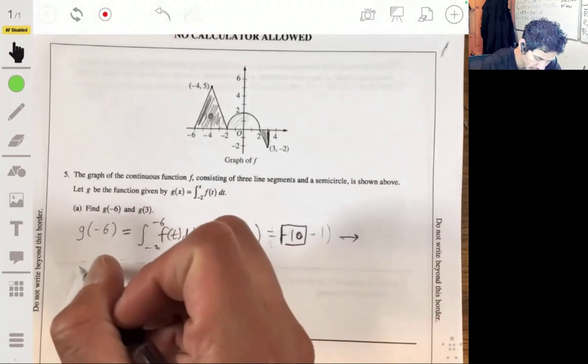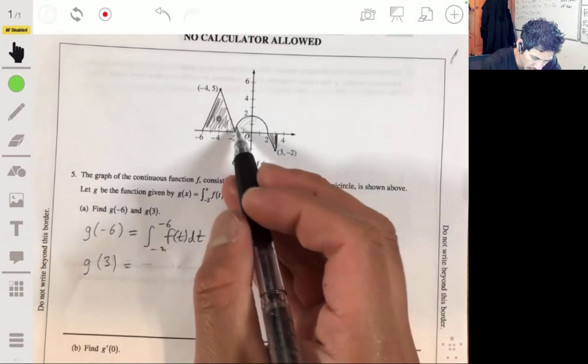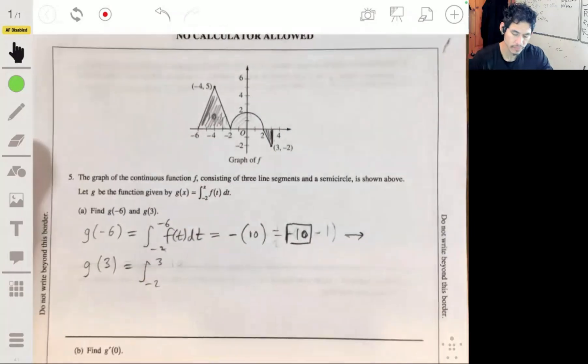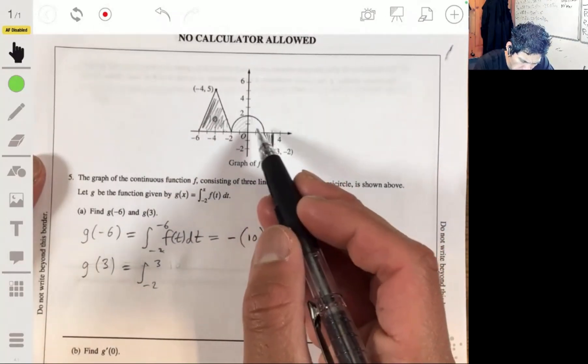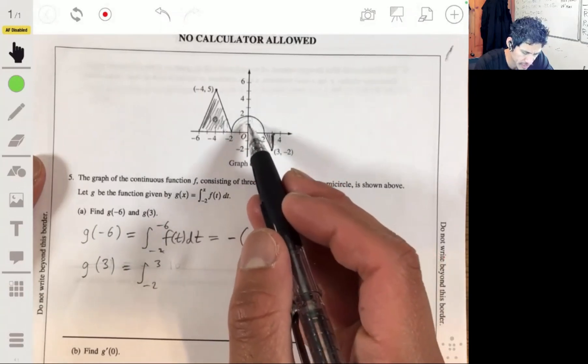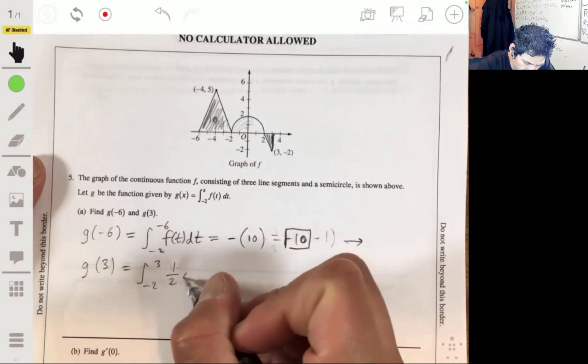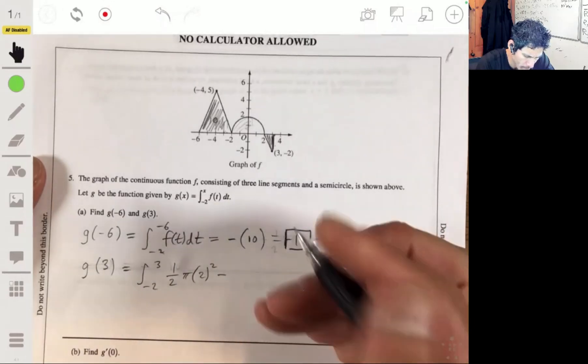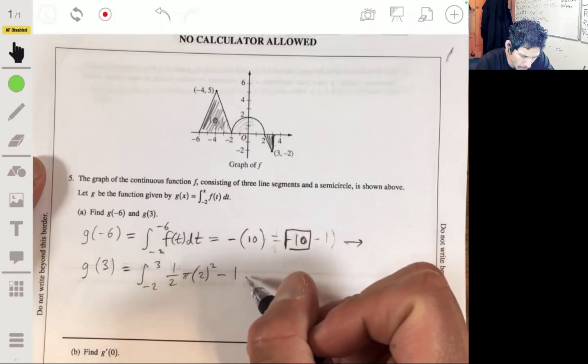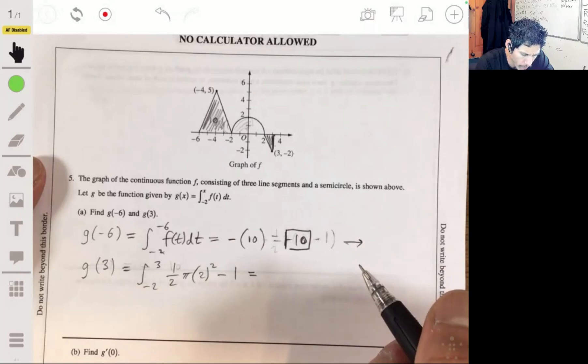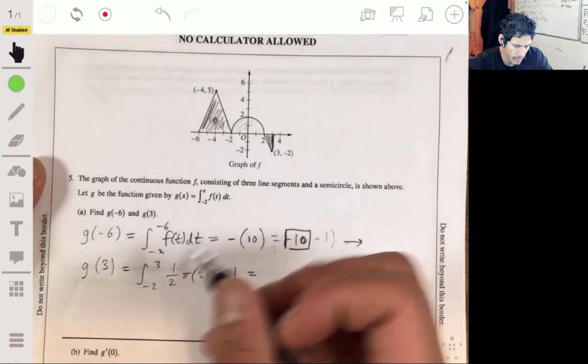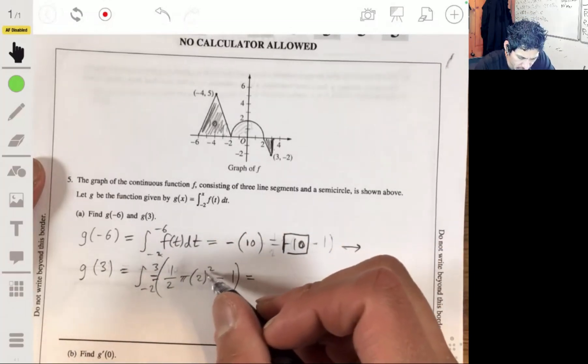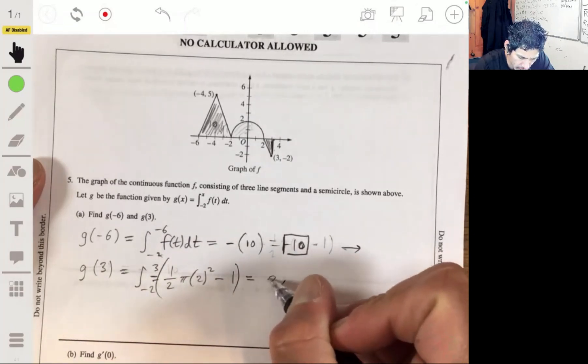All right, part two, g of 3. That'll be the integral from negative 2 to 3. Okay, so I see, this is the half circle right there, which is the one half pi times 2 squared minus the 1. I mean this part, it's just starting here I guess. I got overexcited, so 4, half of 4, 2 pi, so it's just 2 pi minus 1.